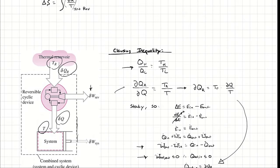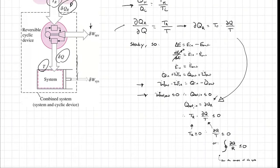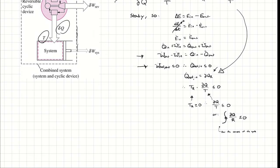The only opportunity I have for heat transfer to cross my boundary is δQ_R, which I'm defining in the inward direction. Therefore, δQ_R itself must be less than or equal to zero. Since δQ_R = T_R × δQ/T, that means T_R × δQ/T must be less than or equal to zero. T_R and T are absolute temperatures, meaning T_R cannot be a negative number. So the only way that multiplication can yield a negative number or less than or equal to zero is if δQ/T is itself less than or equal to zero.